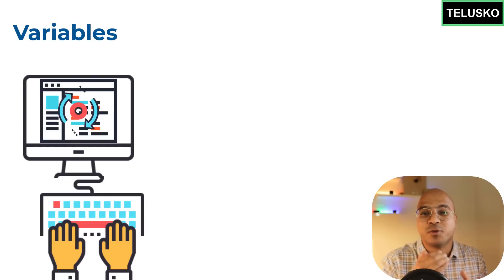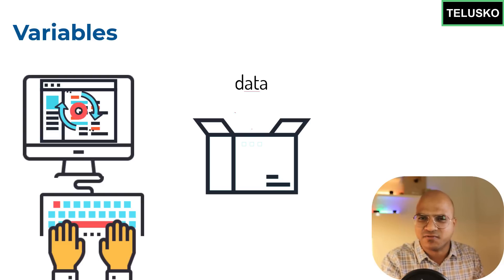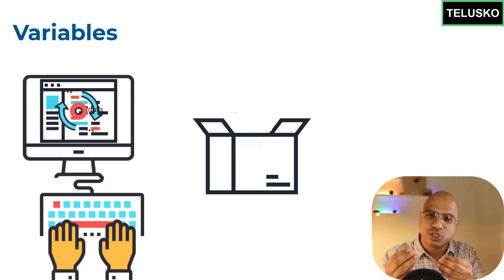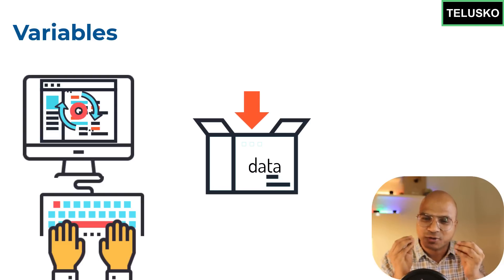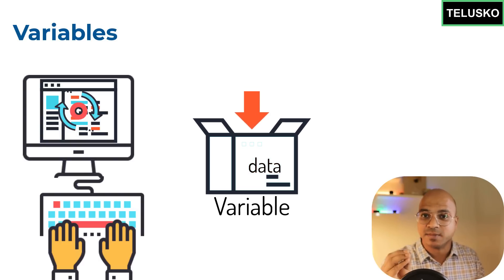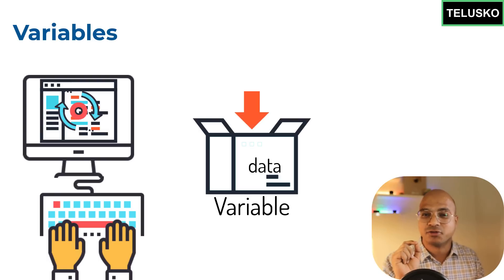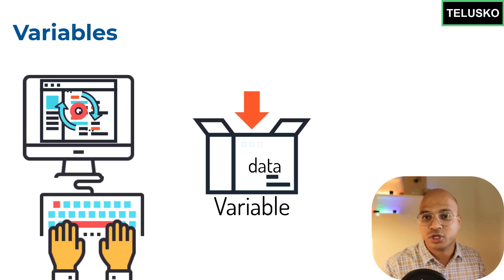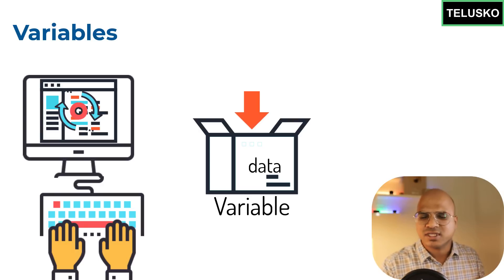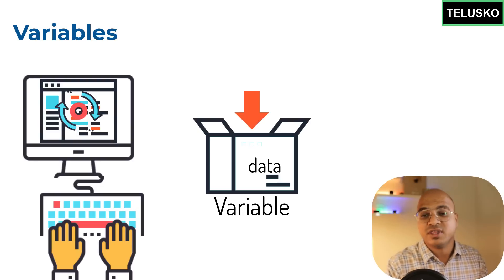Even for processing data, you first have to store it somewhere, and after processing you store it again. That somewhere is variables. Variables are for temporary storage; for permanent storage there are different options. For now, we're focusing on how to store data in code using variables.